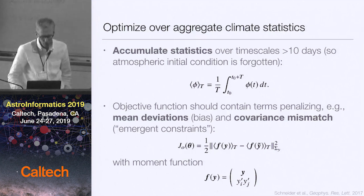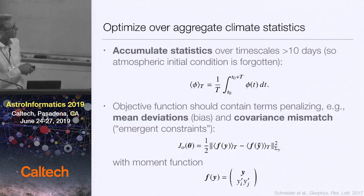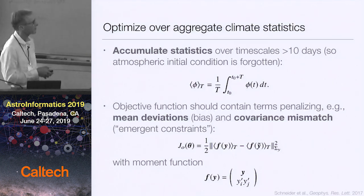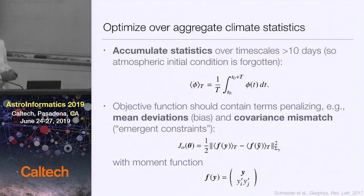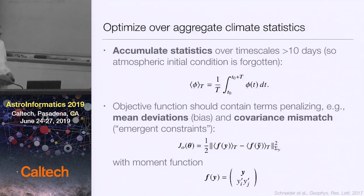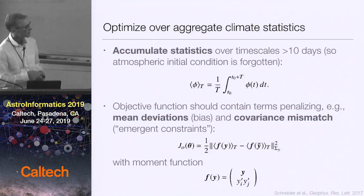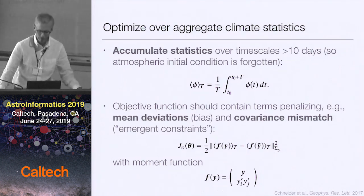What we do is accumulate over statistics, ending up with an objective function that contains a time average long compared to the timescale over which the atmosphere forgets its initial conditions. We minimize an L2 norm of a function f that contains time averages — here's something from observational data, here's something you simulate, and you minimize the mismatches between the two. The function f is a moment function that can contain first-moment statistics, second-moment, or any higher-order moment statistic. It's nice to minimize such a function because statistics tend to be quite smooth — the downside is evaluating it is expensive.